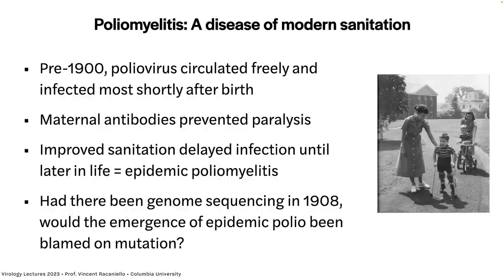Before 1900, there were no toilets and no sewers. Fecally transmitted viruses were everywhere. Kids were immediately infected with poliovirus at birth but were protected by their mother's antibodies transferred across the placenta. By about six months they were infected and made their own immunity without getting poliomyelitis. All these kids were being infected early, protected by maternal antibodies, and then developing their own immunity. We saw only sporadic cases. But then in 1900, toilets and sewers were invented — arguably the greatest invention of humanity.